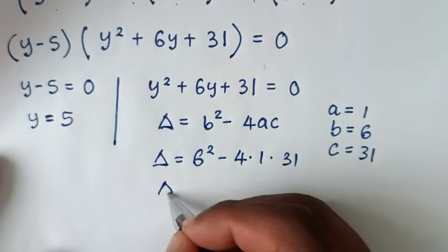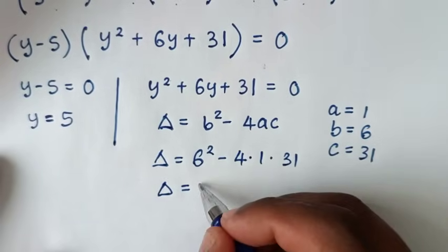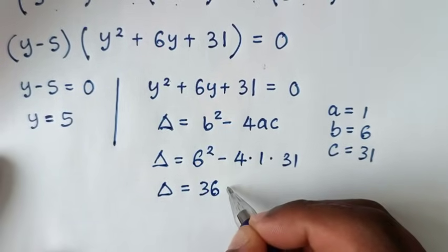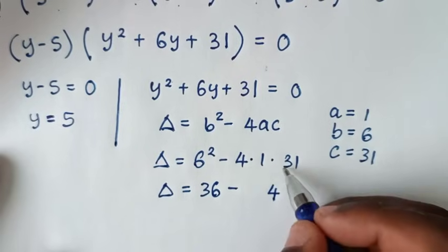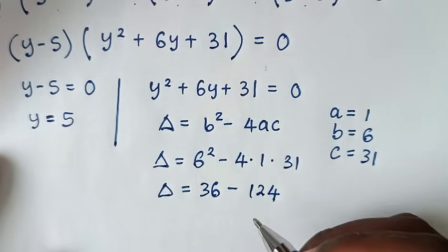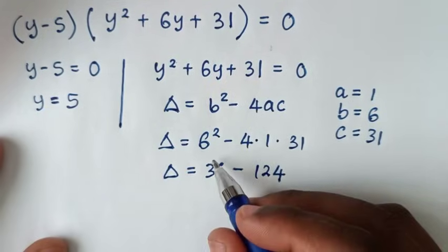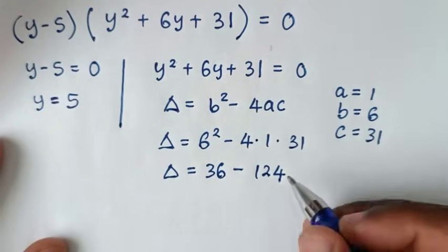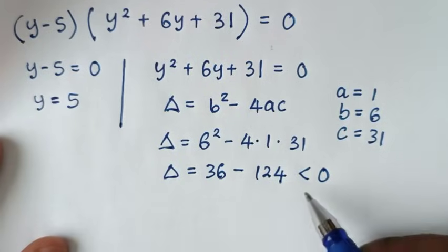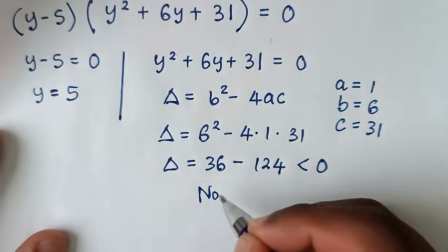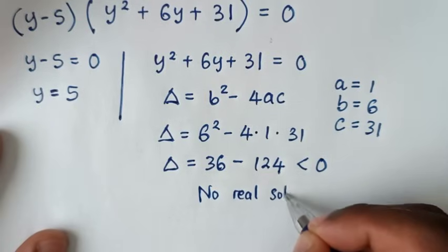So the discriminant equals b squared, which is 6 squared, minus 4 times a which is 1, times c which is 31. So discriminant equals 36, minus 4 times 31. We can see this gives a negative value, so the discriminant is less than 0. If the discriminant is less than 0, then there is no real solution.